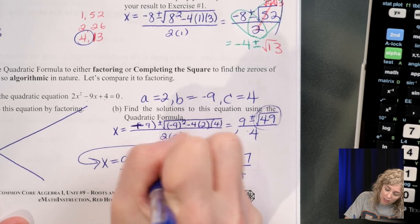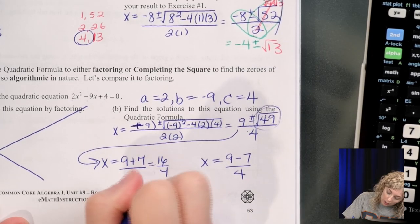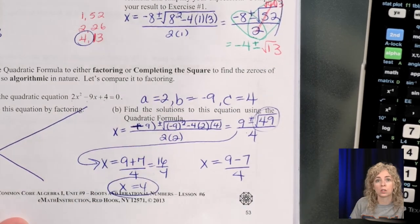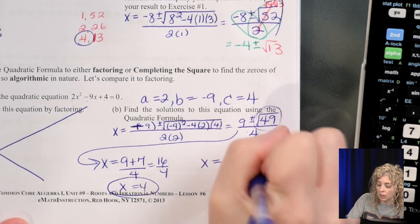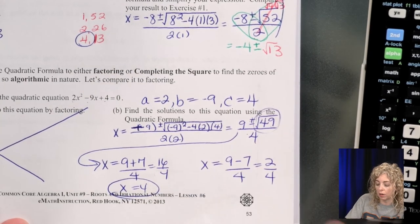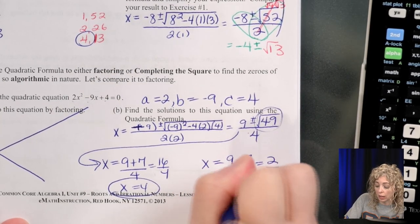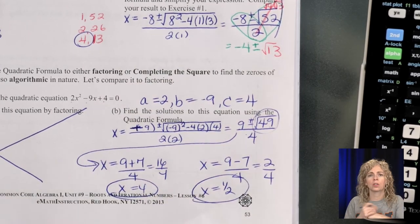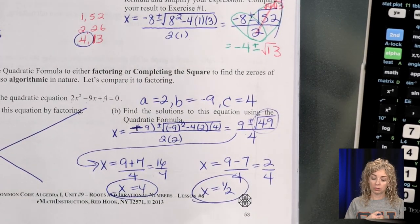So 9 plus 7, 16 divided by 4. So we get x equals 4. It's one solution. And 9 minus 7 is 2. 2 divided by 4 is 1 half. Now you can write the decimal or just leave it 1 half. Okay, now to the back.